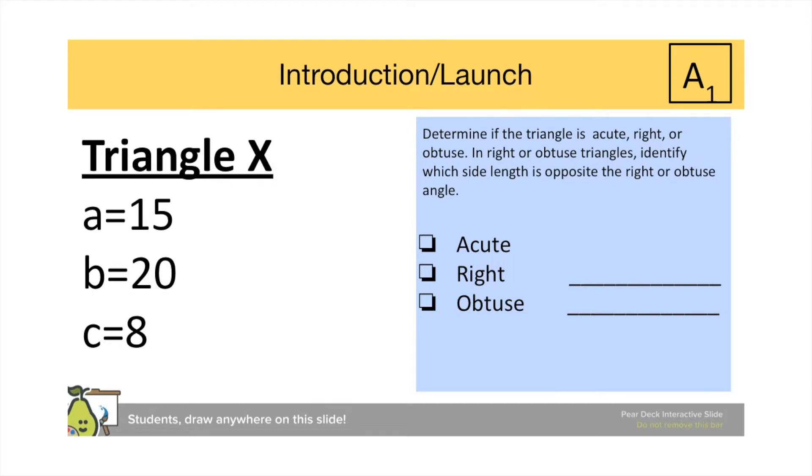Additionally, I made a little checklist so they can quickly identify what type of triangle it is, and a little line next to right and obtuse, so they can identify which side length is the one that is opposite the right or obtuse angle.